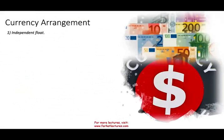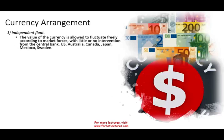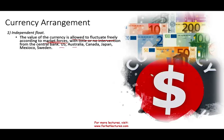Right now we have three currency arrangement systems. First is the independent float, where the value of the currency is allowed to fluctuate up and down according to market forces. The market determines the price of the currency with little or no intervention from the central bank. Countries using a float system include the US, Australia, Canada, Japan, Mexico, and Sweden — most advanced economies use this system.